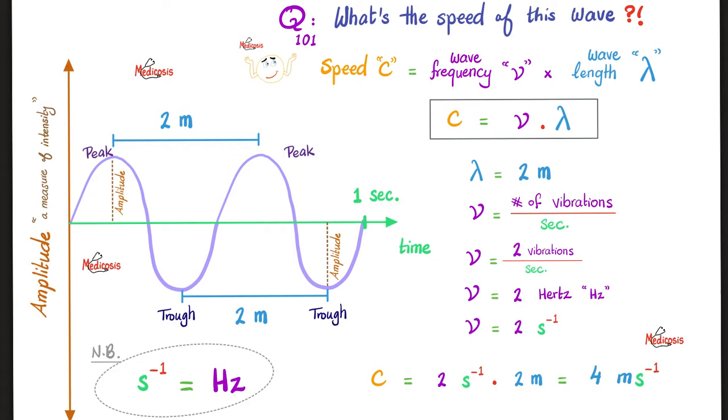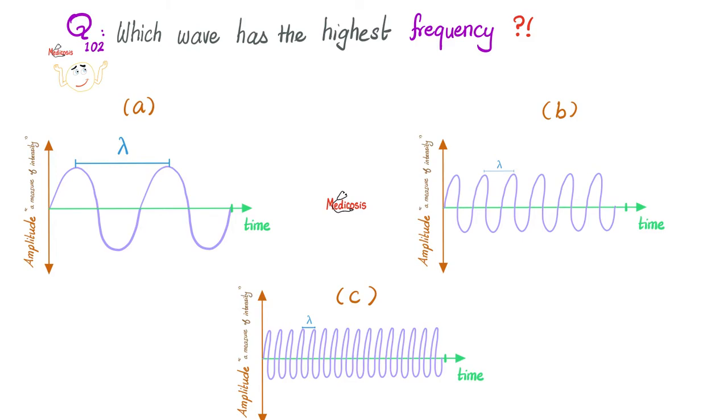So the moral of the story is speed equals distance over time. And speed also equals wave frequency times wavelength. Here is another question. You have three waves. Which one has the highest frequency? Please pause. What's the definition of frequency? Number of vibrations per second. Number of cycles per second. And here I have the highest number of cycles. And of course the question assumes that this is the same time. So I have the same amount of time.